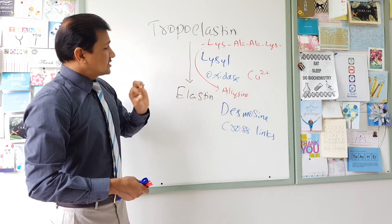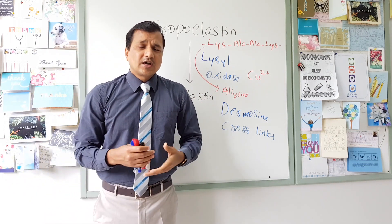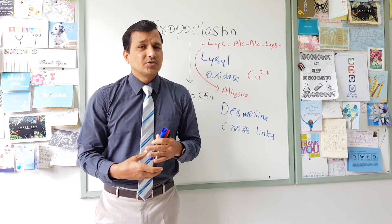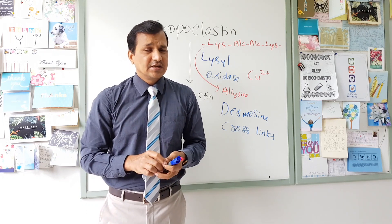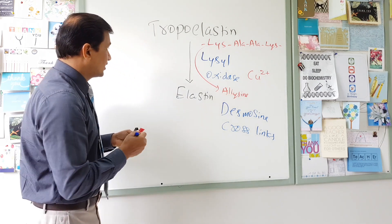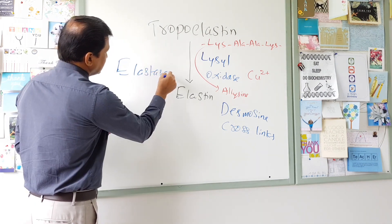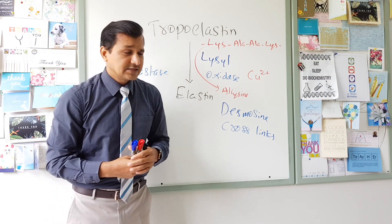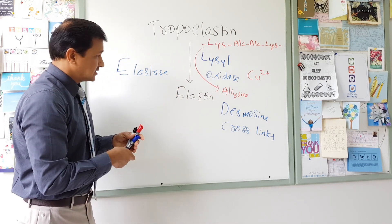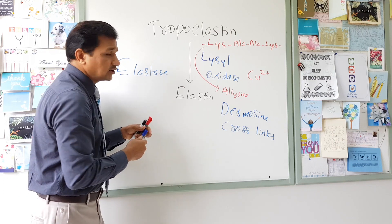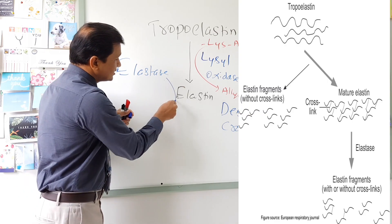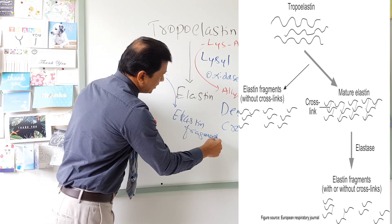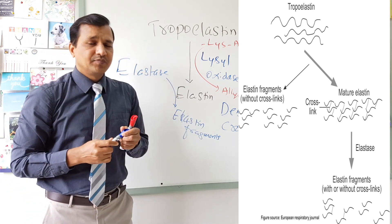Elastin has a very high half-life of about 70 years. Sometimes we need elastin to be degraded, and that is done by an enzyme called elastase. Elastases are secreted by neutrophils — we call them neutrophil elastase — and neutrophil elastase degrades elastin into fragments.